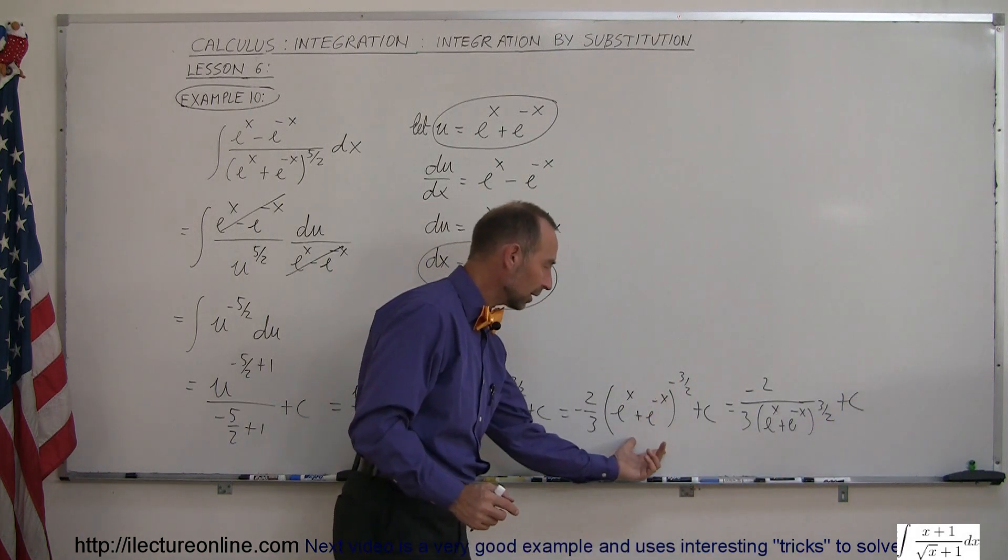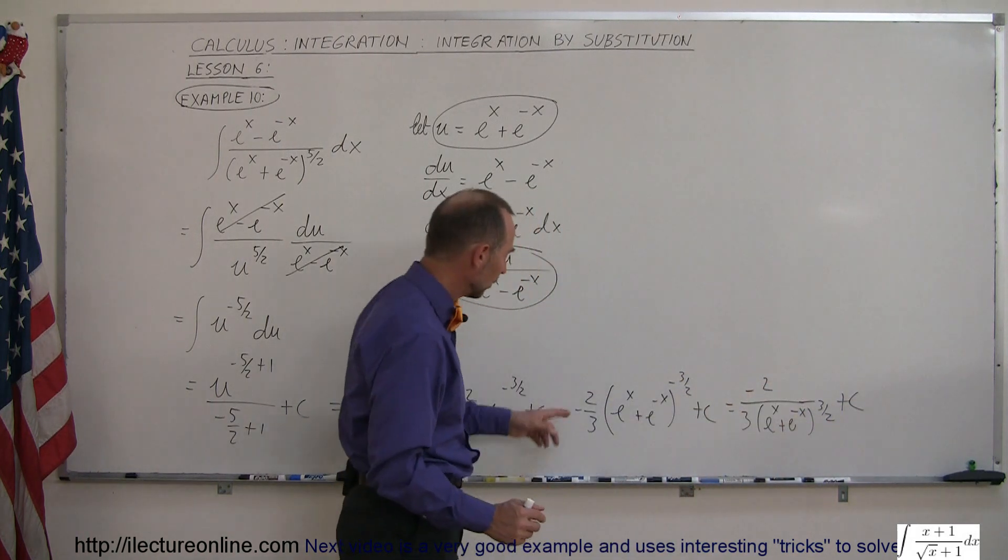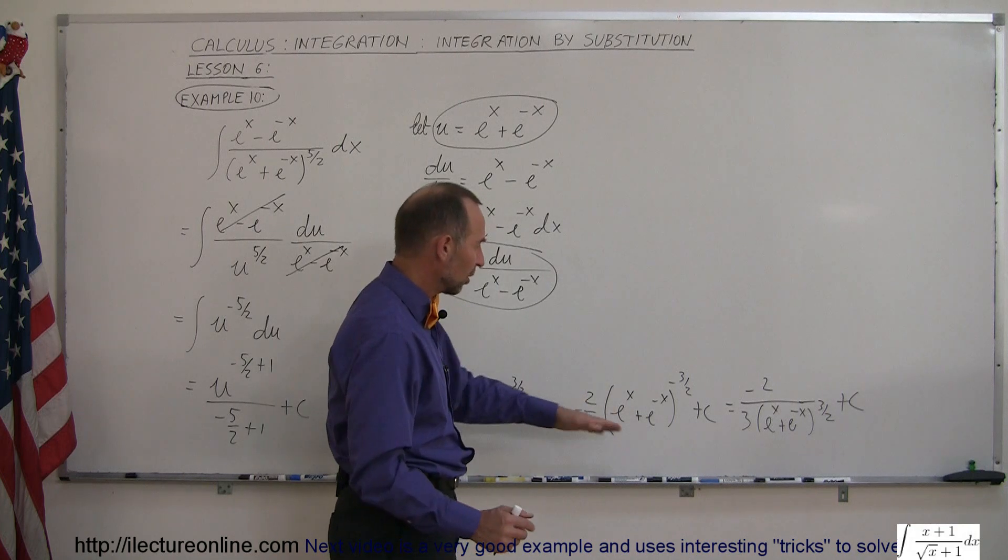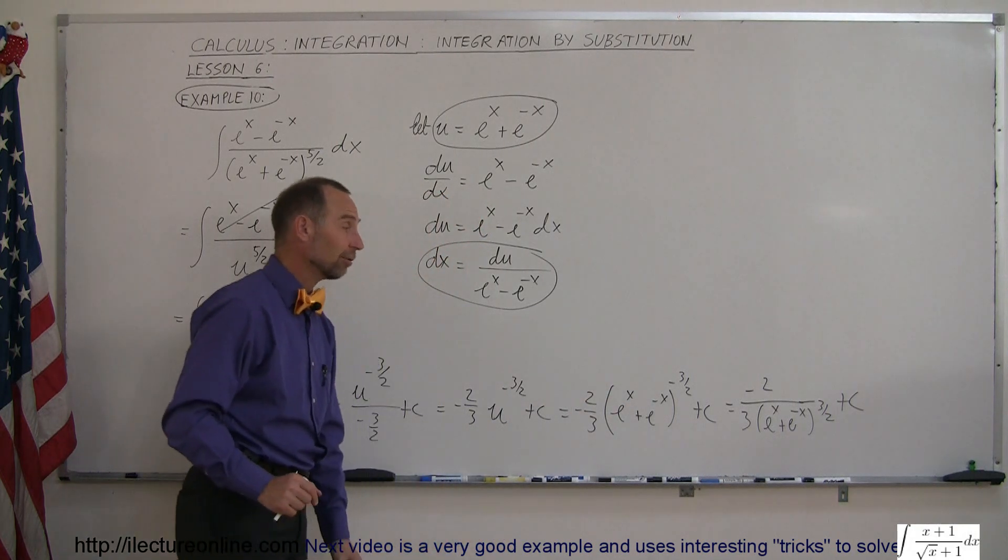So simply taking this quantity, writing it in the denominator with a positive exponent, and the minus two at the top, and the three at the bottom, and that's then the final form of the answer, the integral of this right here.